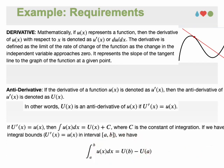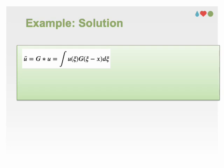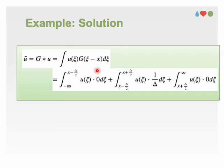After overviewing integral, derivative and anti-derivative, we are ready to come back to the example. We start to calculate U bar as defined through convolution. You can find details of convolution in another video. For a given X, we have three regions from minus infinity to X minus delta over 2, and X minus delta over 2 to X plus delta over 2, and X plus delta over 2 to positive infinity.